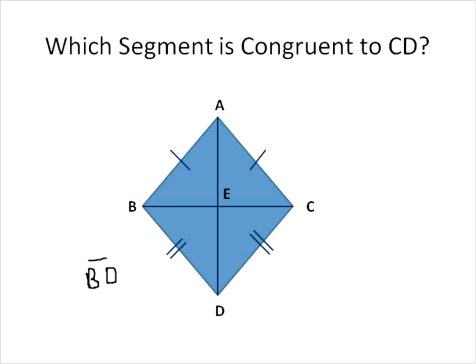Those are congruent line segments. Which line segment is congruent to line CD? I have it written in here BD. CD is congruent to DB because they have two points in the line segment.